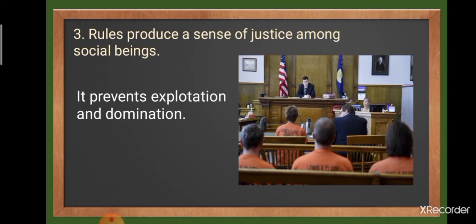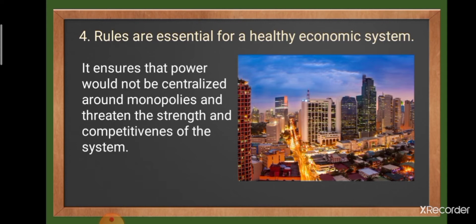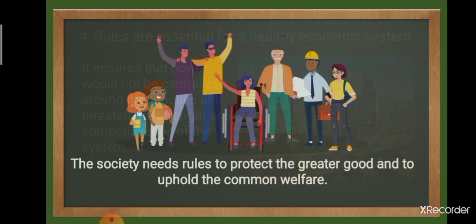And fourth, rules are essential for a healthy economic system. It ensures that power would not be centralized around monopolies and threaten the strength and competitiveness of the system. Without rules, a country may experience an extreme divide between social classes. Rules also ensure the safety of products and employees, and help monitor the quality of services offered. For instance, we have copyright and patents that help protect people's intellectual property. The society indeed needs rules to protect the greater good and uphold the common welfare. Even the freest forms of human communities necessitate rules and regulations to function soundly and to prevent exploitation and tyranny.